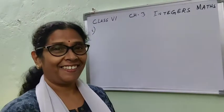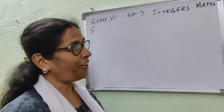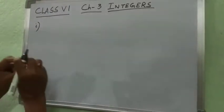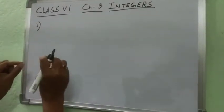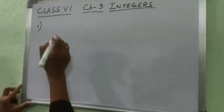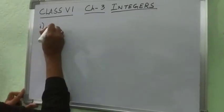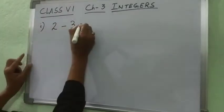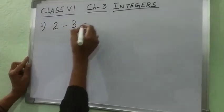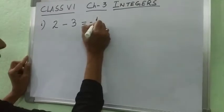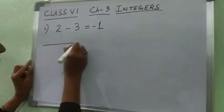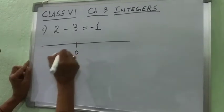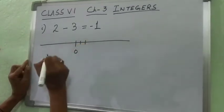How are you children? I am going to discuss subtraction of integers and how to represent them on a number line. Now I am writing a question: 2 subtract minus 3. After evaluating we get the value minus 1. Now how to represent on the number line? Plus 2 means positive direction, it will move 2 steps.